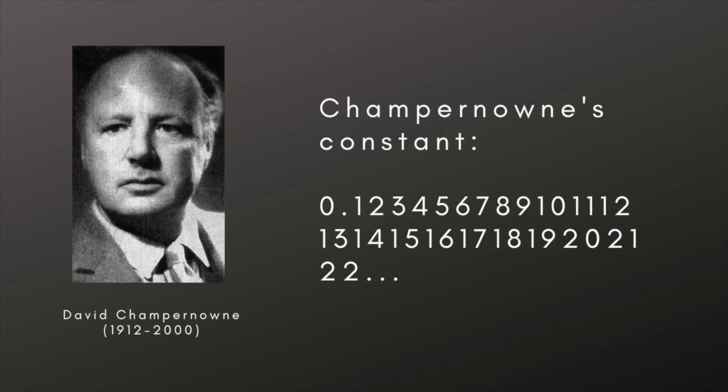Other proven normal constants exist, but like that found by Champernowne, they've been artificially constructed to be normal. It's still to be proven whether pi is normal in any base, let alone absolutely normal.